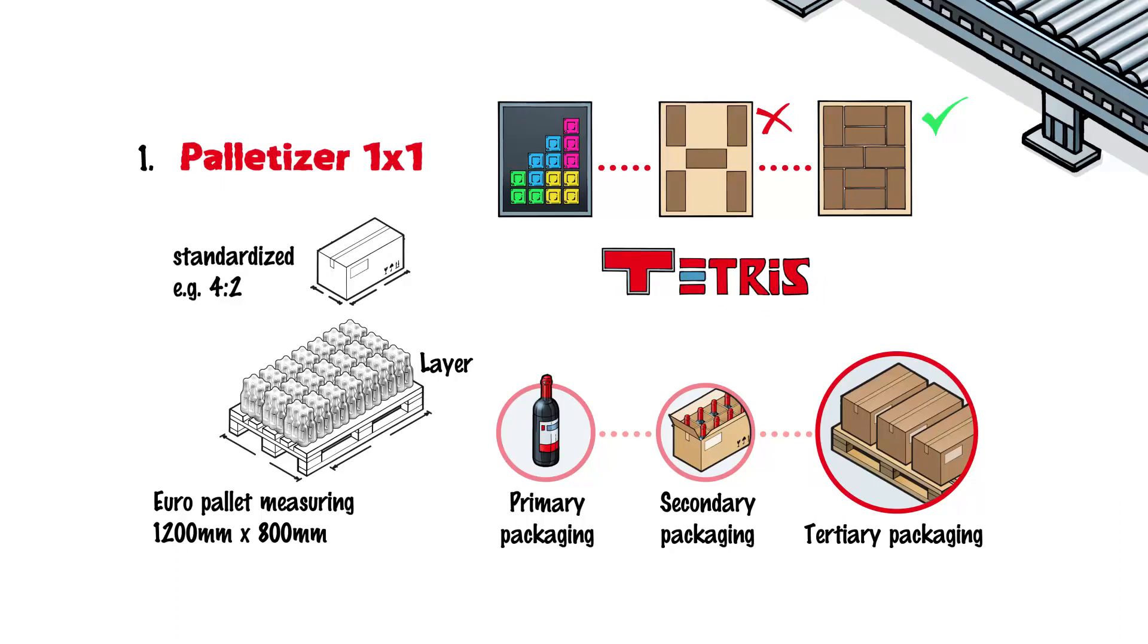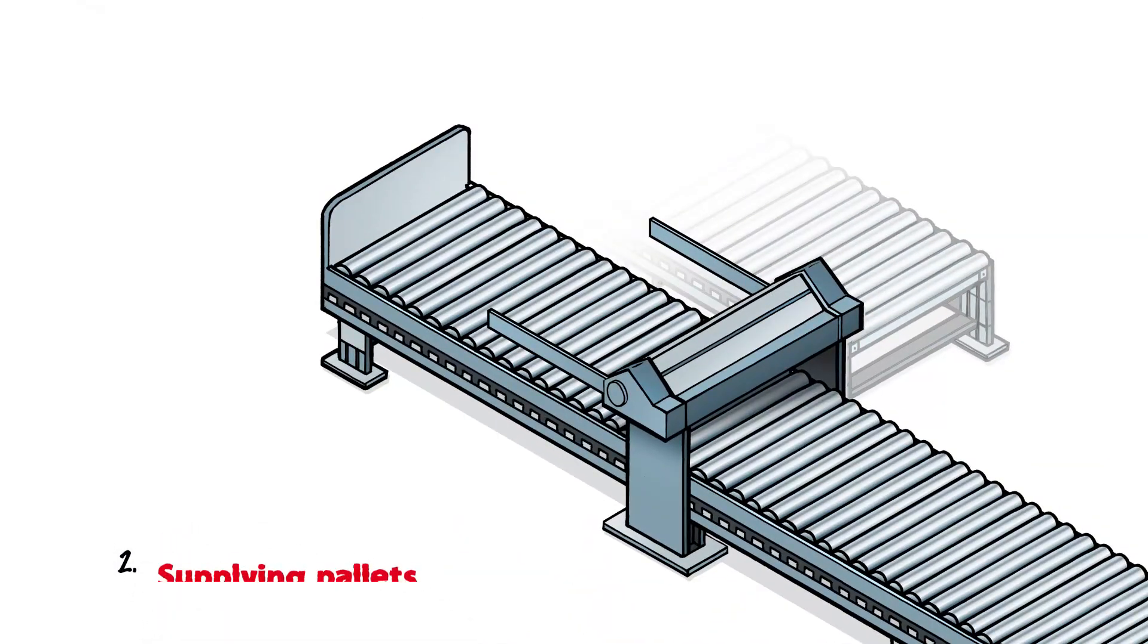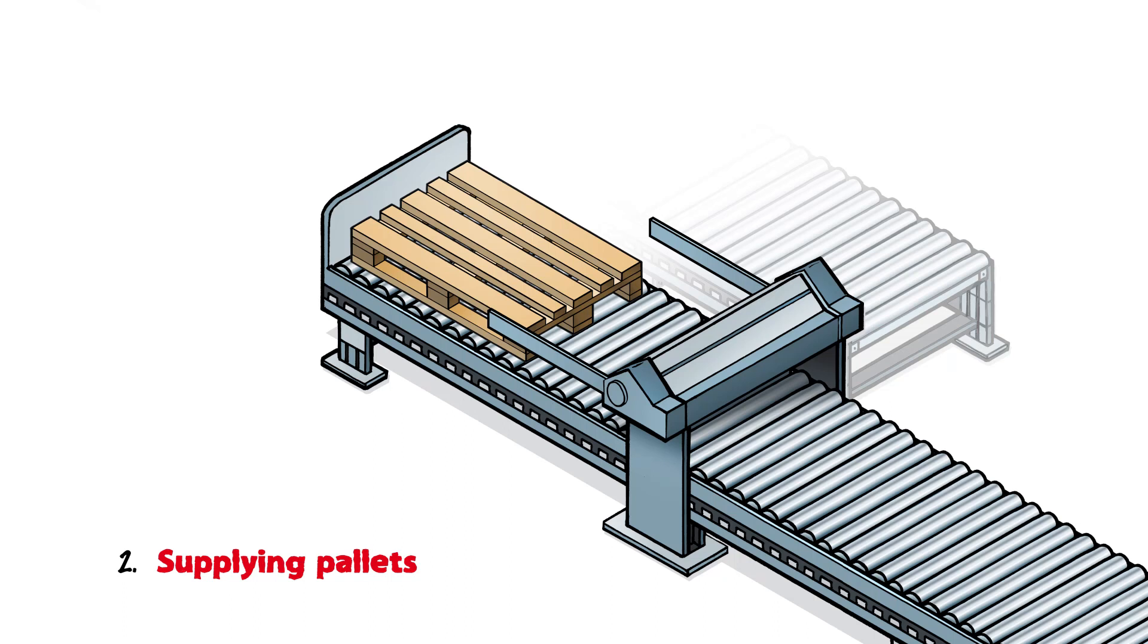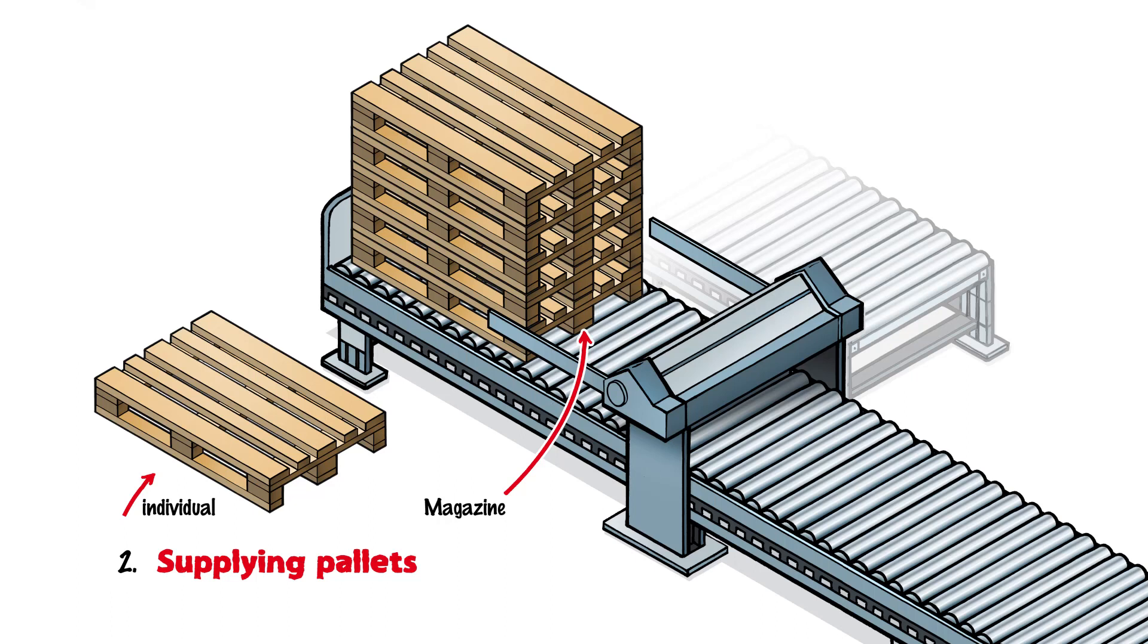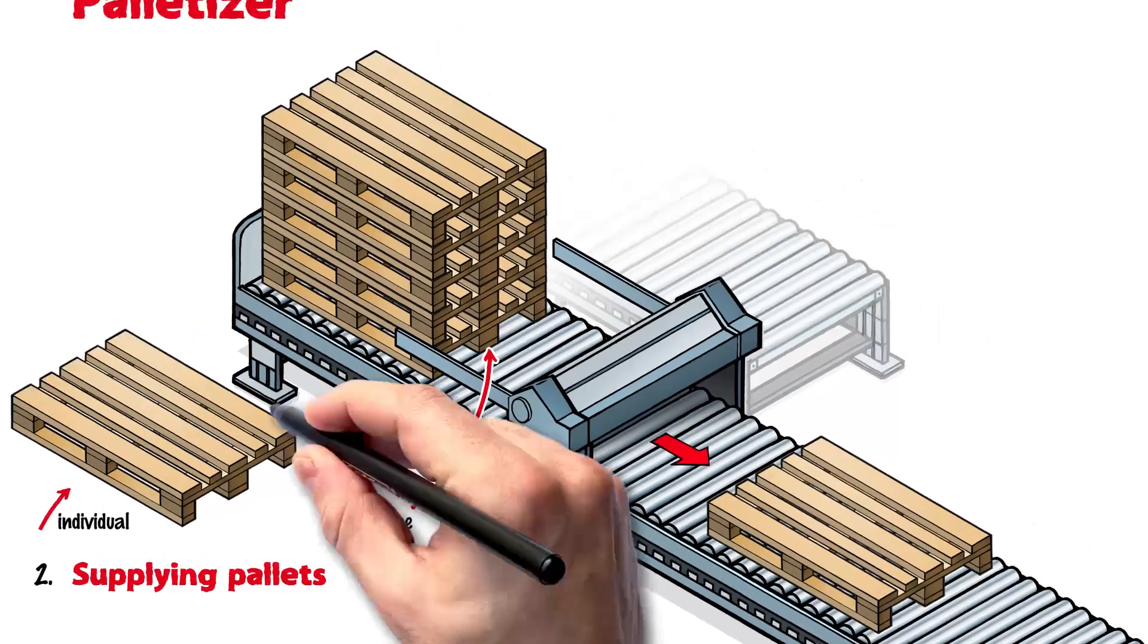But how does the product get onto the pallet? Pallets first need to be fed into the machine, either individually or as a magazine. In the latter case, the machine itself separates and forwards the pallets.